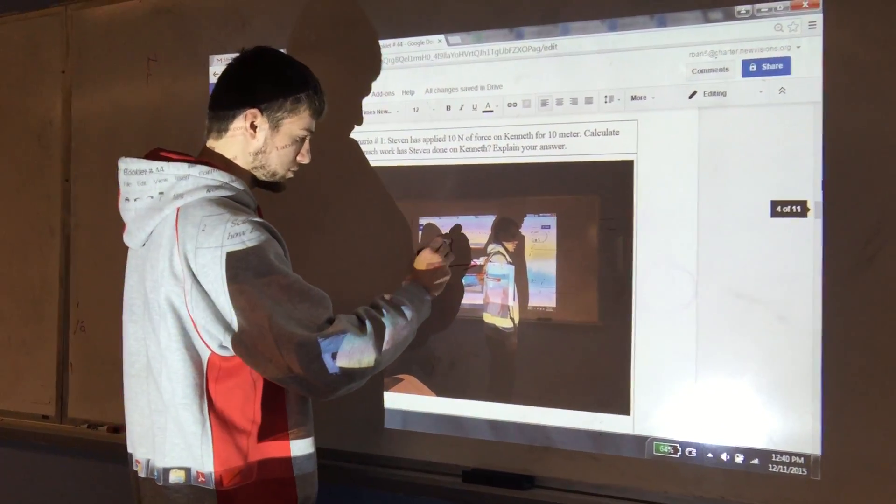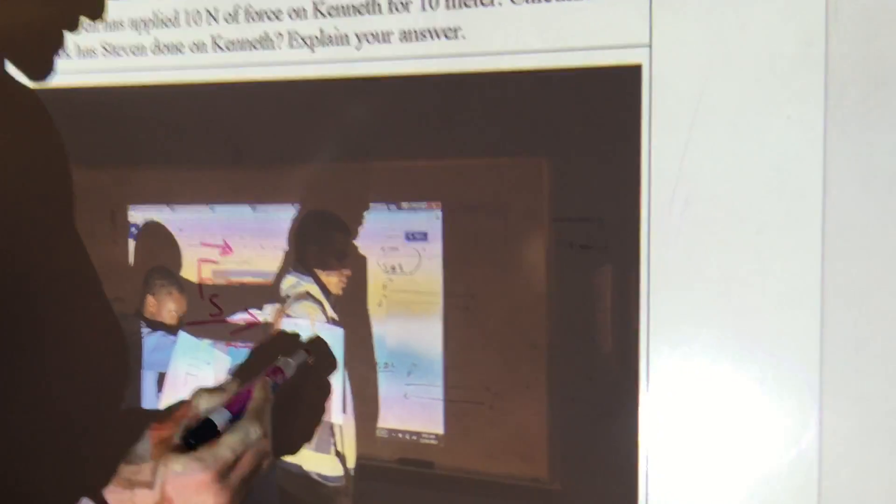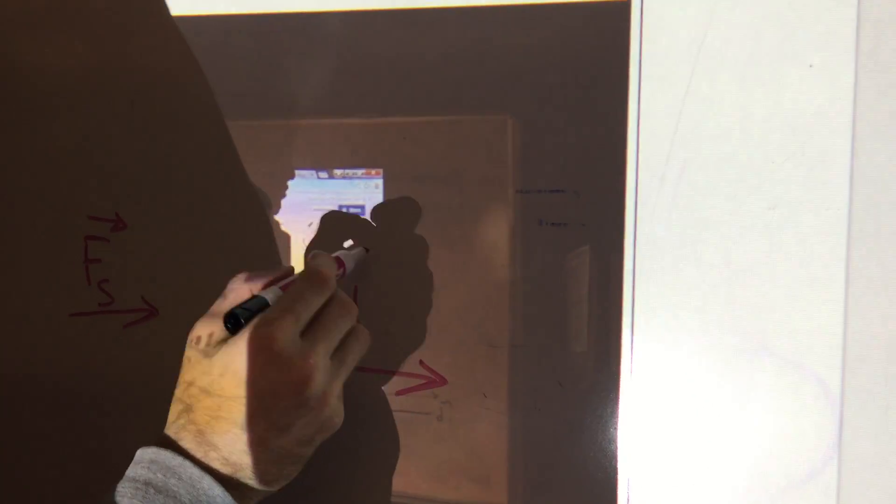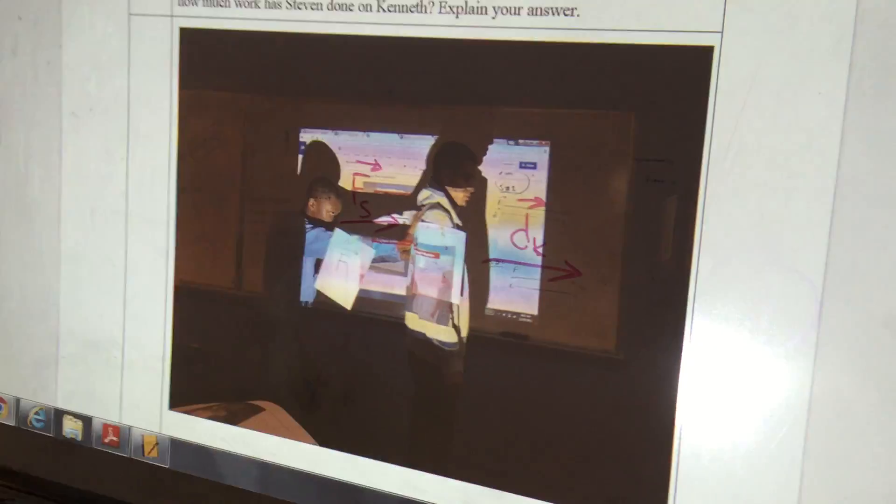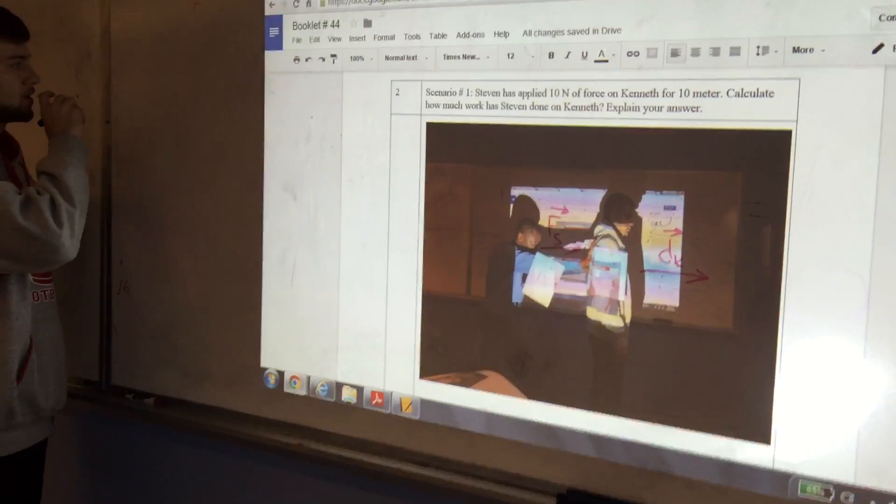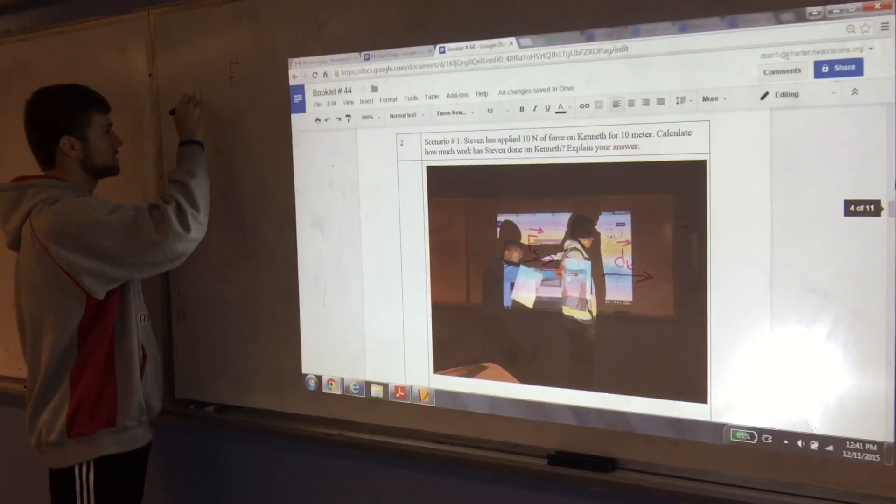So the F of Steven and Kenneth is moving the same direction, so that'll be displacement of Kenneth. So that means the cosine is zero degrees. To find the work, we gotta use the equation: work equals F times D times cosine theta.